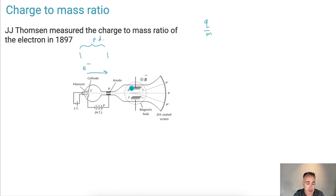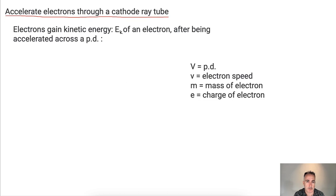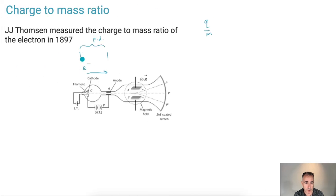Then the electrons enter a region of magnetic field — in this case, into the page. What that's going to do is make the electrons curve, and by the amount that they curve, they could figure out the charge-to-mass ratio. Let's go over what happens in this first step, where they're first being accelerated across a potential difference.